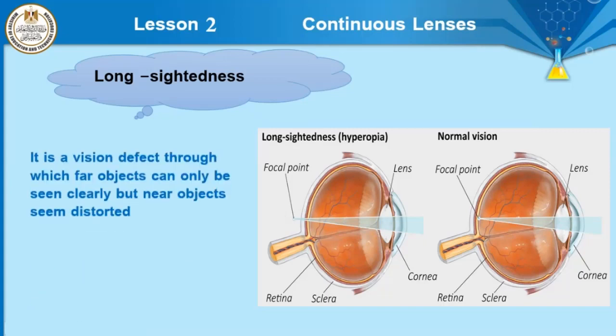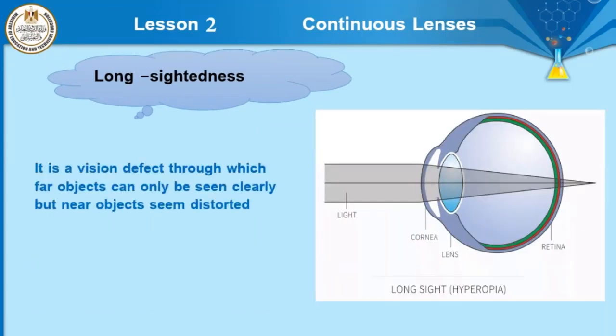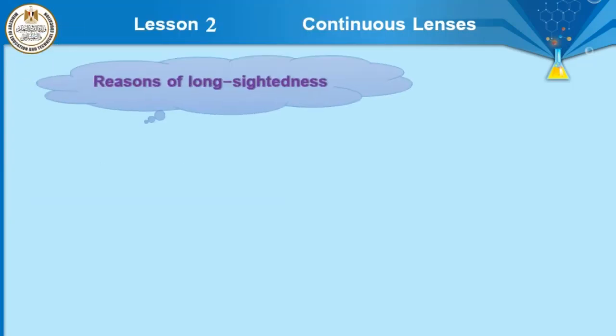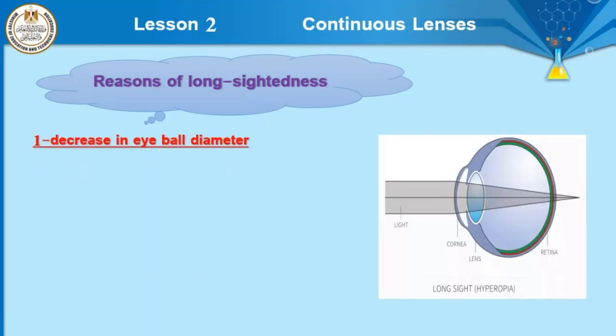The person suffering from long sightedness can see far objects clearly, while near objects appear distorted. Long sightedness is a vision defect through which only far objects can be seen clearly, but near objects appear distorted. The reasons: number one, decrease in eye ball diameter — opposite to short sightedness, where the eye ball diameter is larger than normal.